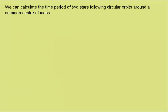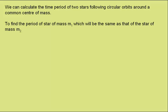We can now calculate the time period of two stars following circular orbits around their common centre of mass. If we find the period of star of mass m1, this will be the same as that of the other star of mass m2. The mass they orbit around is effectively the combined mass of the two stars, m1 plus m2.